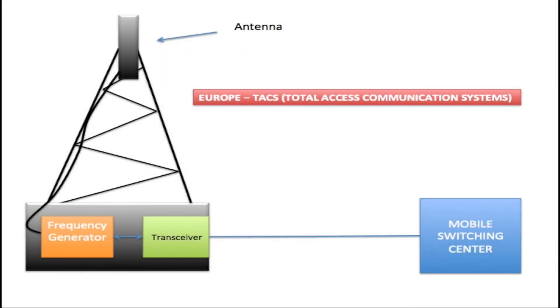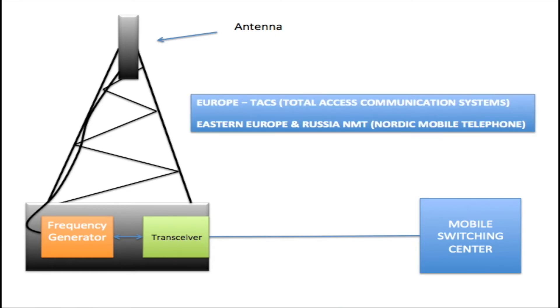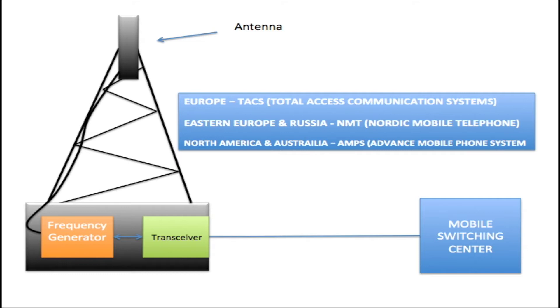When you got your 1G cell phone from a local carrier it was not compatible with other local carriers' networks, so there was no such thing as roaming on the 1G network. Compatibility internationally was even more of an issue. The European 1G network was called TACS, which stands for Total Access Communication System. In Eastern Europe and Russia the network was called NMT, which stands for Nordic Mobile Telephone, and in North America and Australia the network was called AMPS, which stands for Advanced Mobile Phone System.